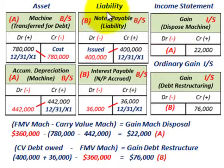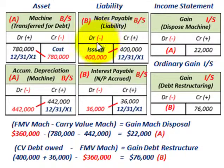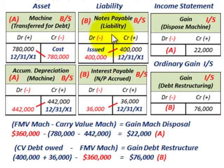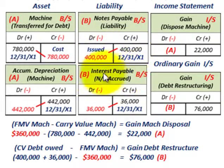The next thing to deal with is the liability — the notes payable and the interest payable. The bank is going to forgive Corporation A for paying this note. Corporation A won't have to pay back the notes payable or the interest payable, provided they transfer the machine at its fair value. So on the balance sheet, they debit notes payable for $400,000 to remove it, and also debit interest payable for $36,000.